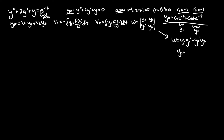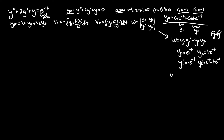We know y₁ = e^(-t) and y₂ = te^(-t) from our homogeneous solution. y₁' = -e^(-t), bringing out the coefficient. For y₂', using the product rule f'g + fg' where f = t and g = e^(-t): f' = 1, so we get e^(-t) + t·(-e^(-t)), which simplifies to e^(-t) − te^(-t). The Wronskian equals y₁·y₂' minus y₁'·y₂, substituting: e^(-t)·(e^(-t) − te^(-t)) minus (−e^(-t))·te^(-t).